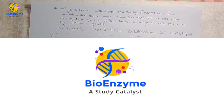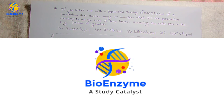The options given are: 2300 CFU/ml, 2 to the power 6 CFU/ml, 12800 CFU/ml, and 200 to the power 6 CFU/ml. We have to do the calculation, and this question is very similar to the first one.